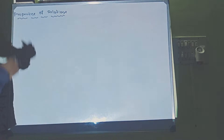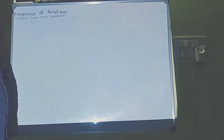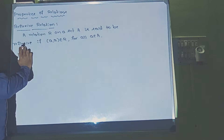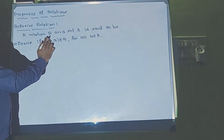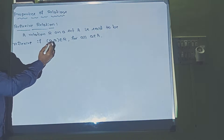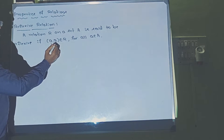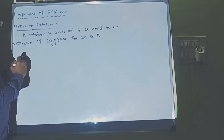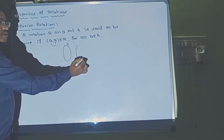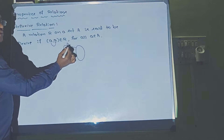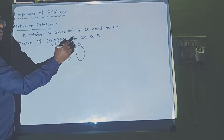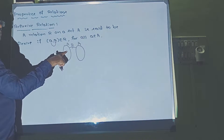Let us see the properties of relations. The first property is the reflexive relation. A relation R on a set A is said to be reflexive if every element is related with itself. That means suppose you have a set A, and we define a relation R from A to A itself.